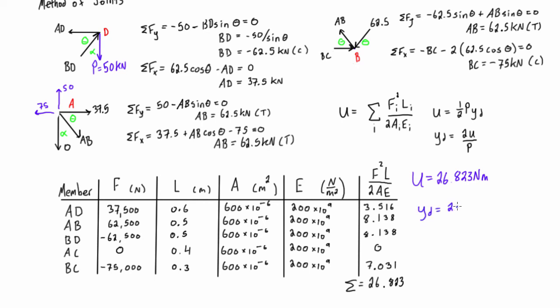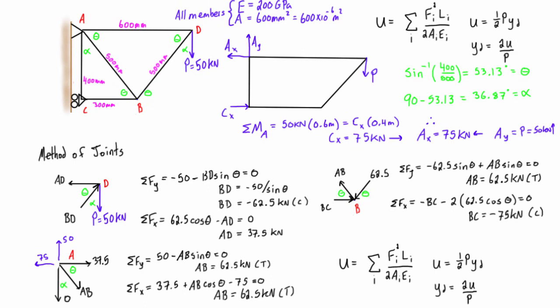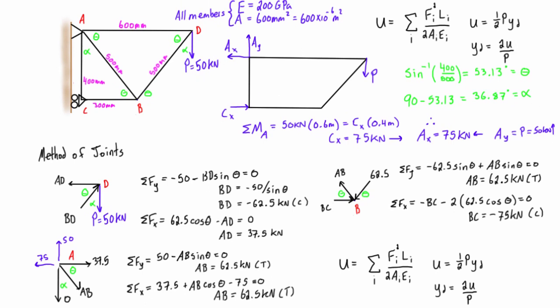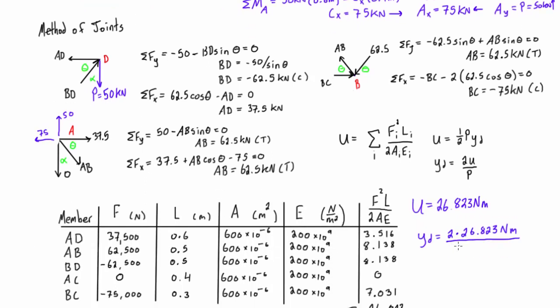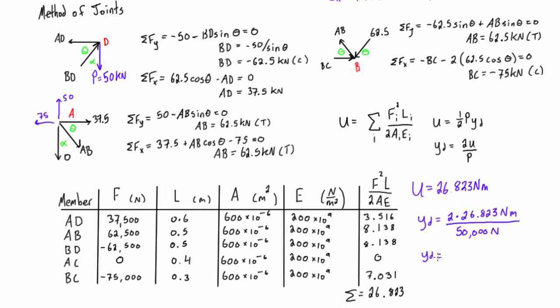So we have YD is equal to 2 times U, which is 26.823 newton meters, divide that all by the applied force which was 50 kilonewtons, so we'll just put that into newtons, so that's 50,000 newtons. And that's going to give us YD here is 0.00107 meters.